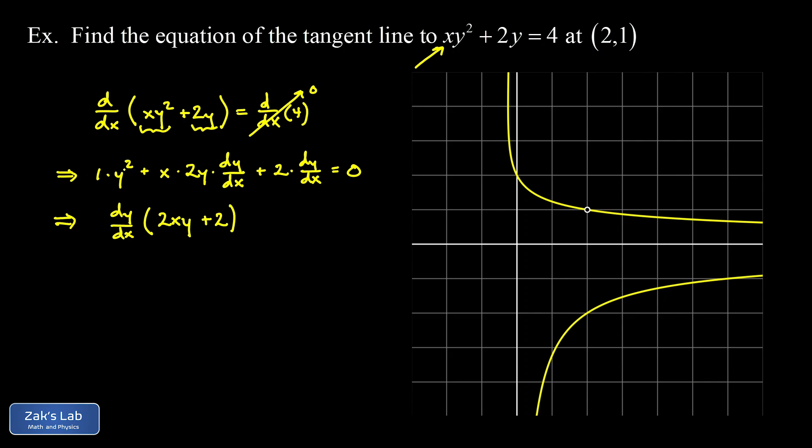And at the same time I'm going to subtract this term from both sides. So subtract y² from both sides and I get a -y² on the right hand side. And now we can isolate dy/dx as a function of x and y. So I end up with -y²/(2xy + 2).